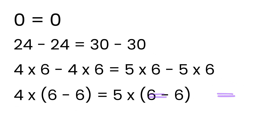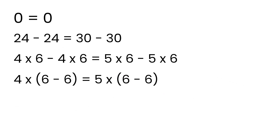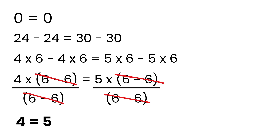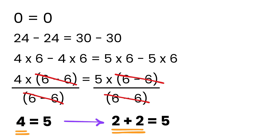That looks fine, right? Awesome! Now here comes the magic. Since both sides have this (6 minus 6), we divide both sides by (6 minus 6). So now, the (6 minus 6) cancels out on both sides, and we are left with 4 equals 5. Yes, you heard that right — 4 equals 5, which means 2 plus 2 equals 5, because 4 is just 2 plus 2.